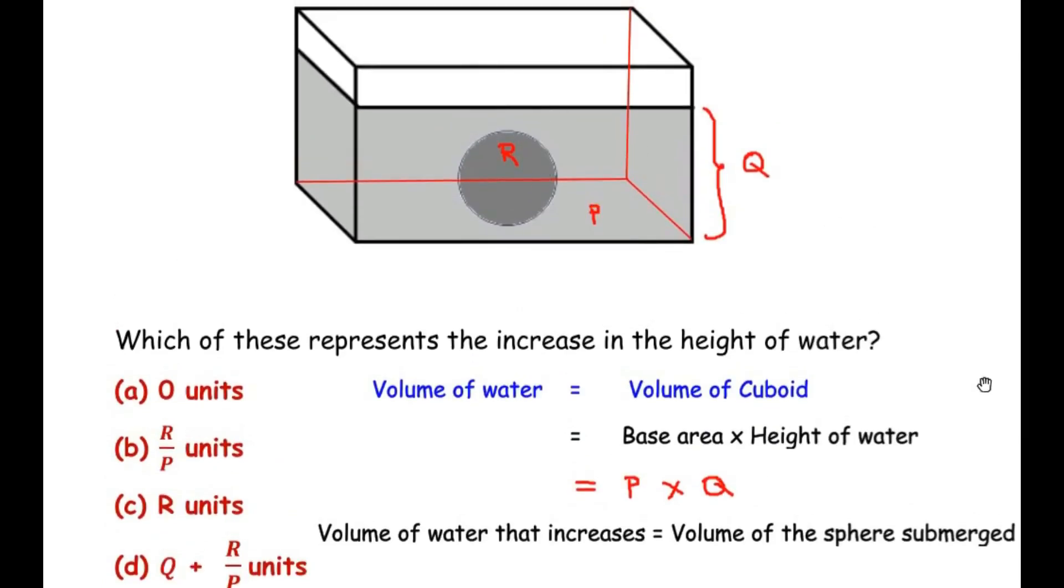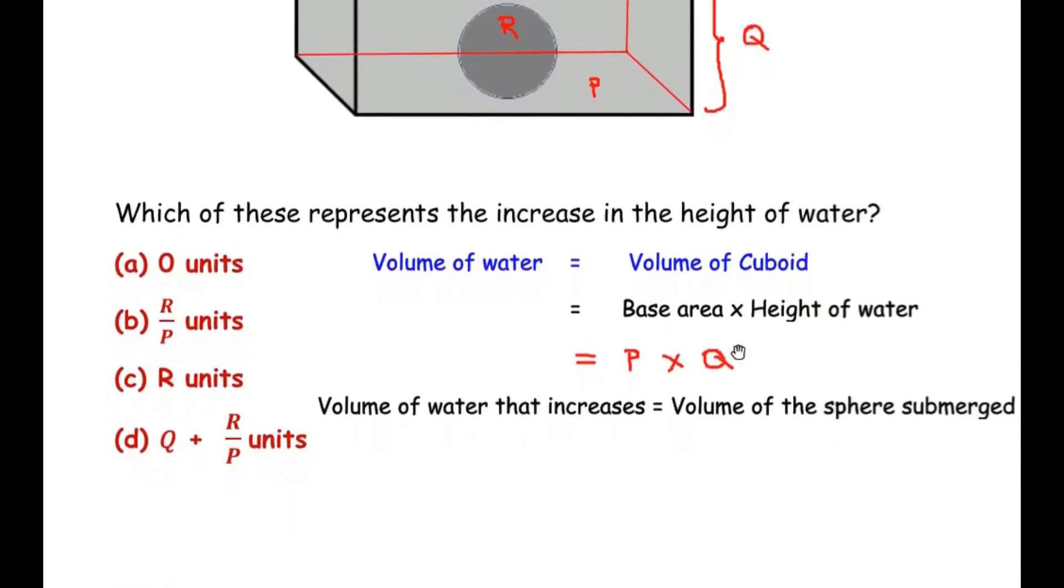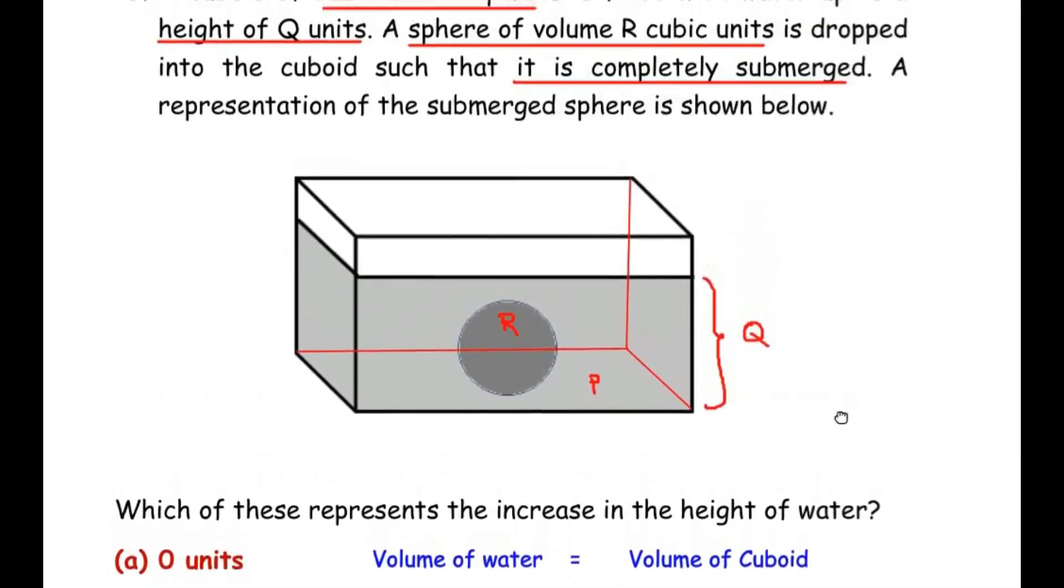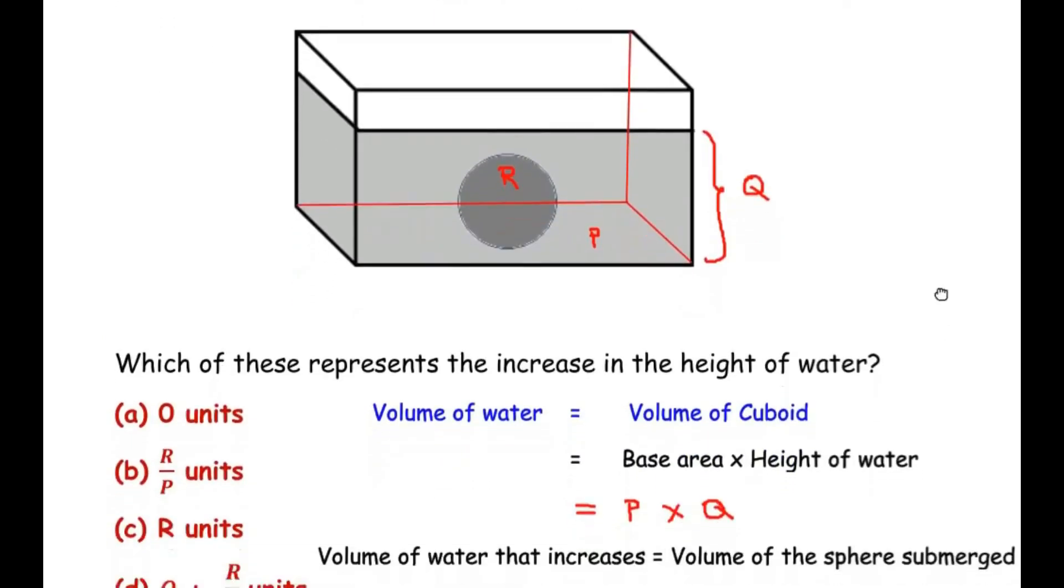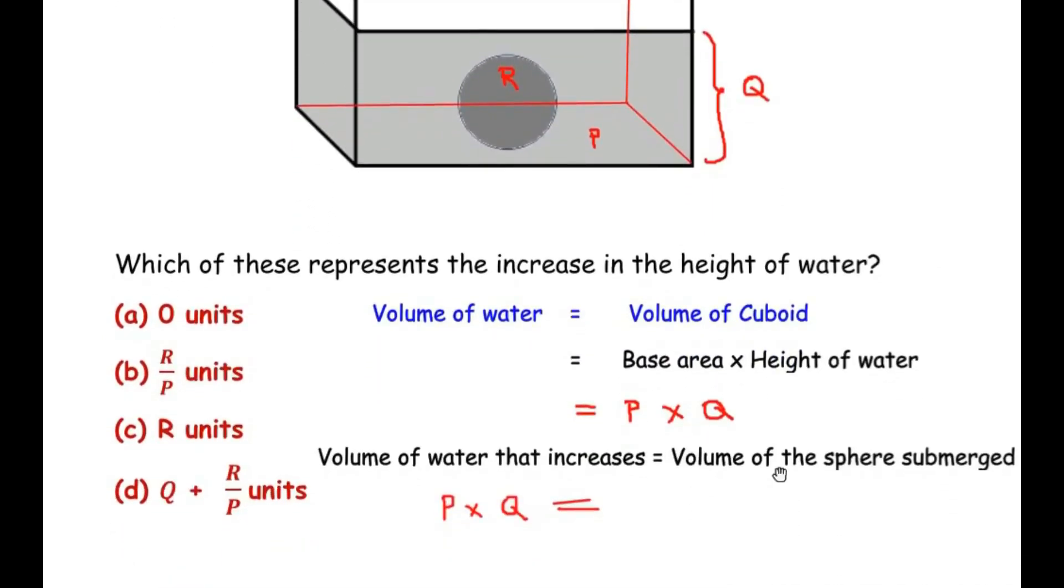So here you can see volume of water that increases is equal to volume of the sphere that submerges inside the water. Now volume of the water is nothing but P times Q as we got here. So let us write P times Q equal to the volume of the sphere that is submerged. Now in the question, volume of the sphere was given as R cubic units. So we are going to substitute in place of volume of sphere R.